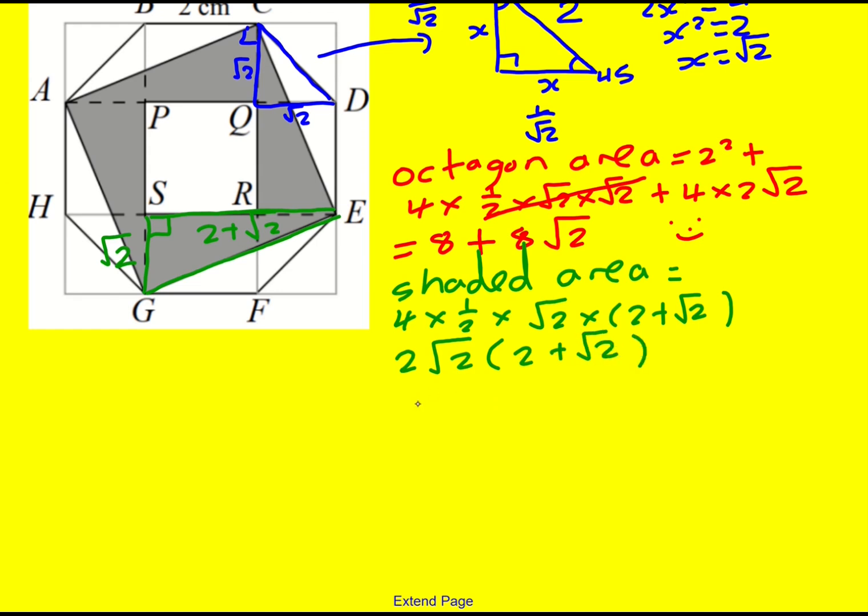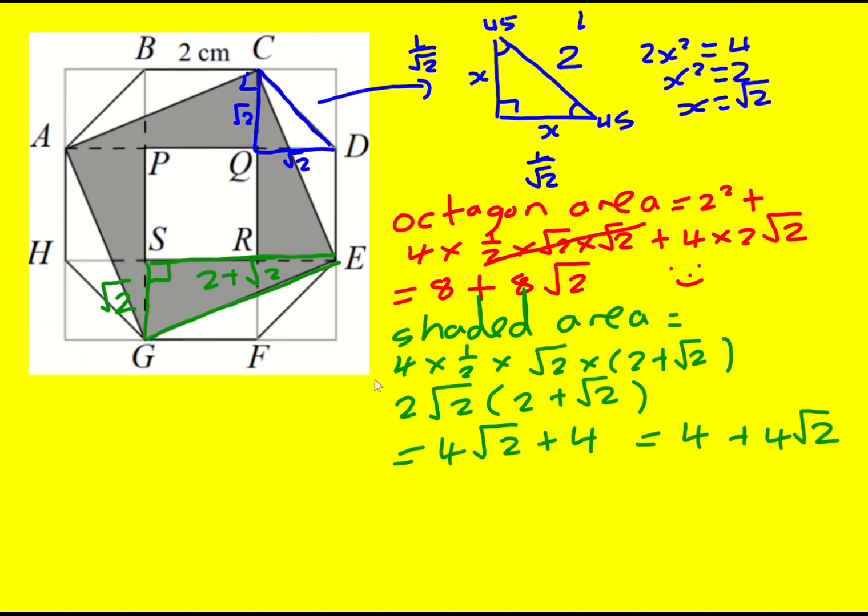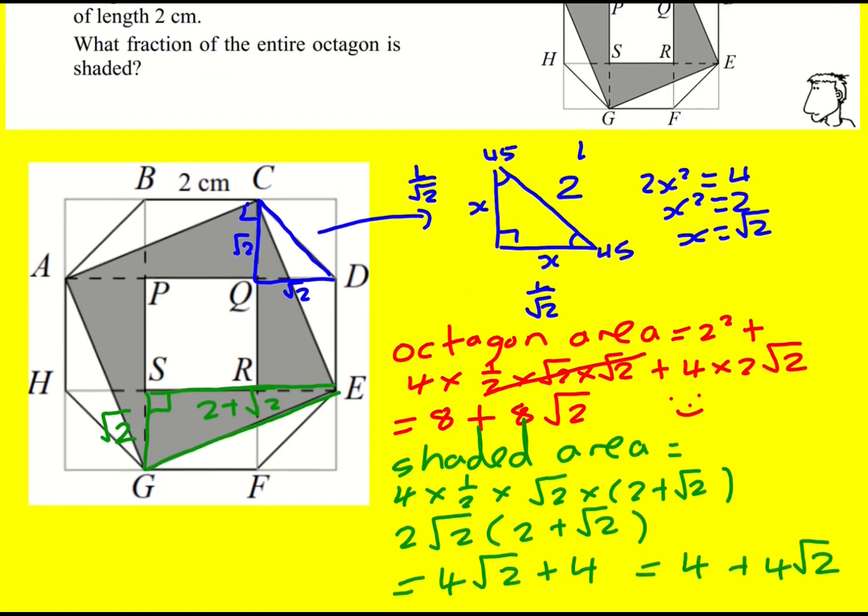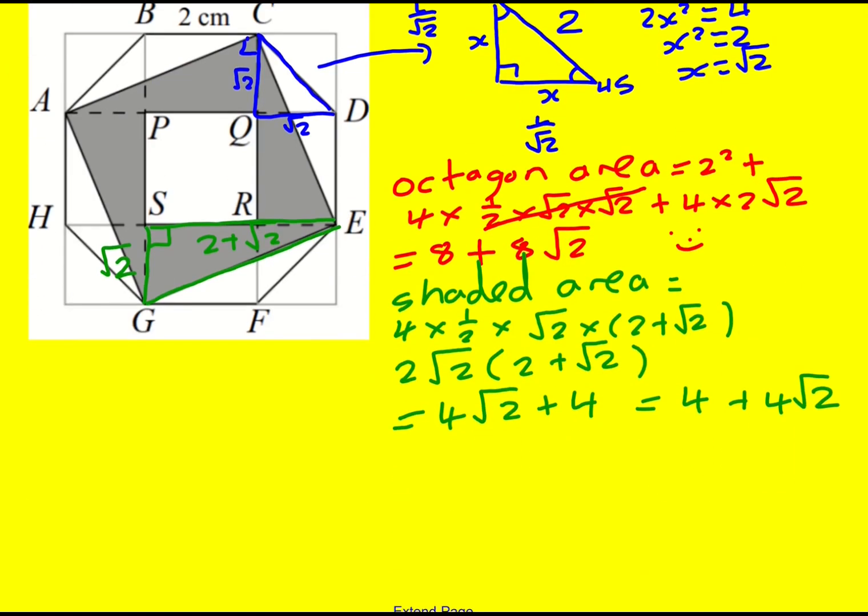I think I'm going to need to expand my bracket now. So I'll get 4 root 2 plus, now root 2 times root 2 is just 2. So I'm going to get 4 root 2 plus 4. Or if I rewrite it with the integer first, 4 plus 4 root 2. Okay, it doesn't simplify any more than that. So what fraction is shaded?